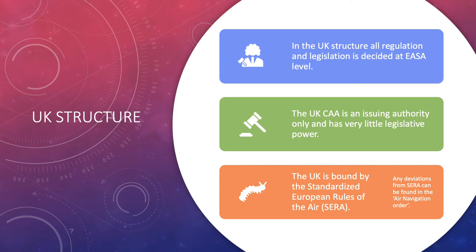In the UK, all structure and regulations are decided by EASA, which sits above the UK Civil Aviation Authority. EASA sets out these guidelines, and as part of EASA we must follow their regulations and legislations. The UK CAA is responsible for implementing and enforcing these within the UK.